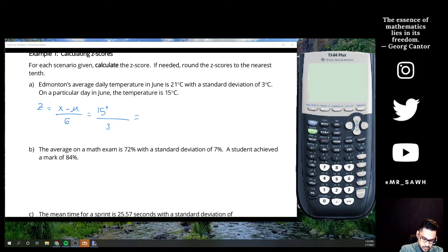So 15 degrees Celsius minus 21 degrees Celsius divided by 3 degrees Celsius. So in the fraction, the units will cancel, right? They'll divide out, they'll simplify to 1. I get negative 6 degrees Celsius on the top when I subtract, divide by 3. So really, my z-score here is going to be negative 2.